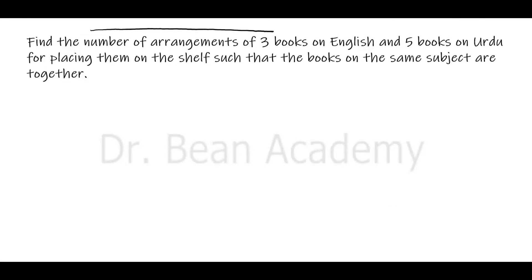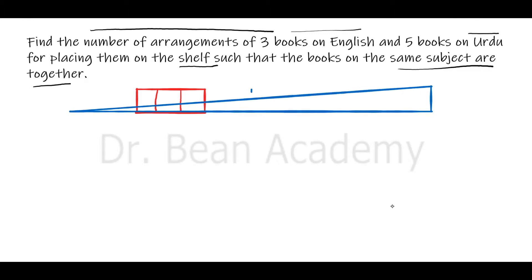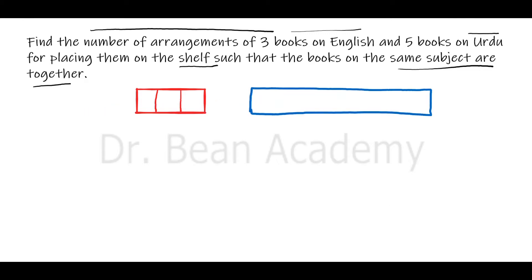Find the number of arrangements of three books on English and five books on Urdu for placing them on a shelf such that books on the same subject are together. So let's say that three books on English are here and then we have five books on Urdu here.